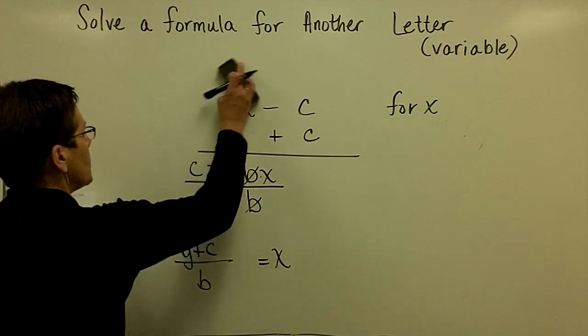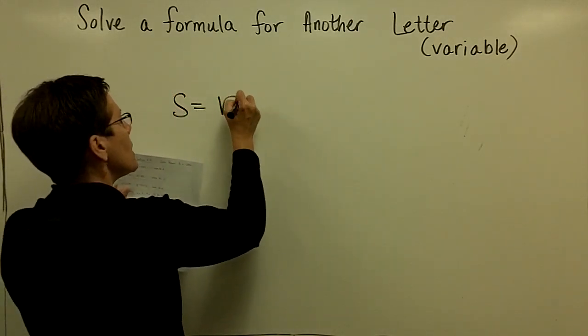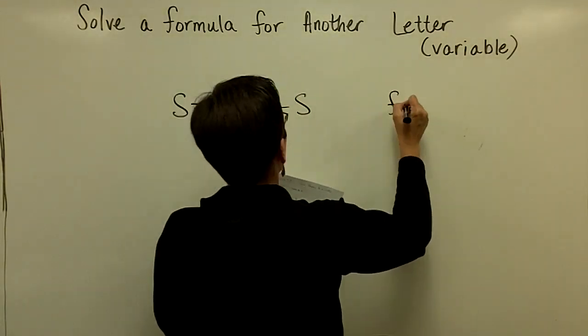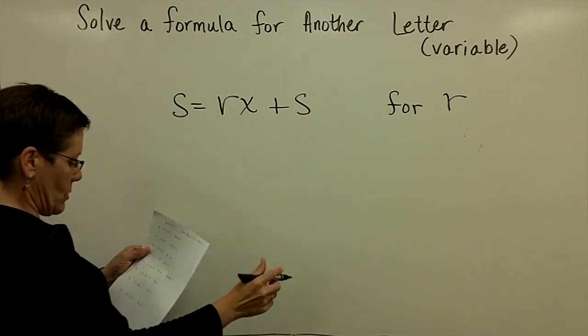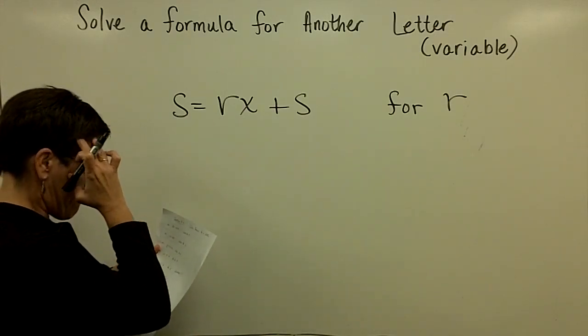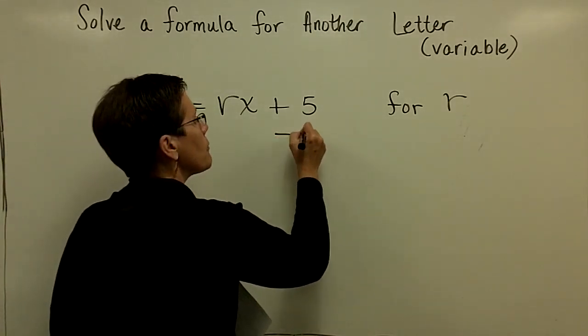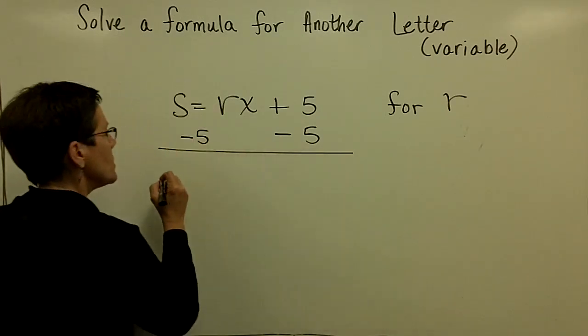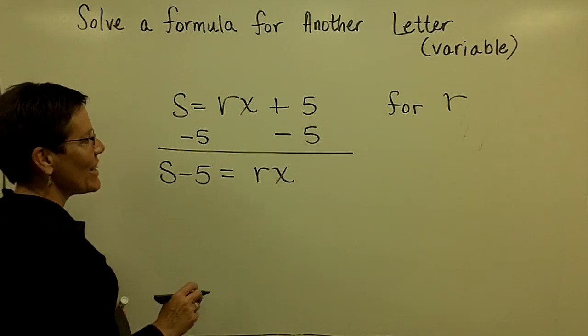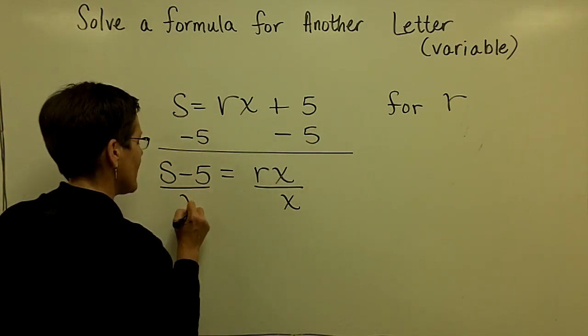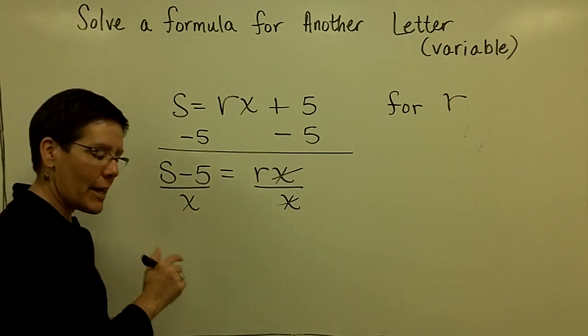Let's do one more in this topic of solving a formula for another letter. Let's say I wanted to solve for the letter r here. r is right in this term, so I have to get rid of that. I probably meant for this to be a 5. I'm going to change that. Let's subtract 5 from both sides. That's a letter s. I have s minus 5 equals r times x. Couldn't read my own handwriting—5's and s's sometimes are hard to read. I want to solve for the letter r, so let's divide both sides by x to get r alone. r is equal to s minus 5 divided by x.